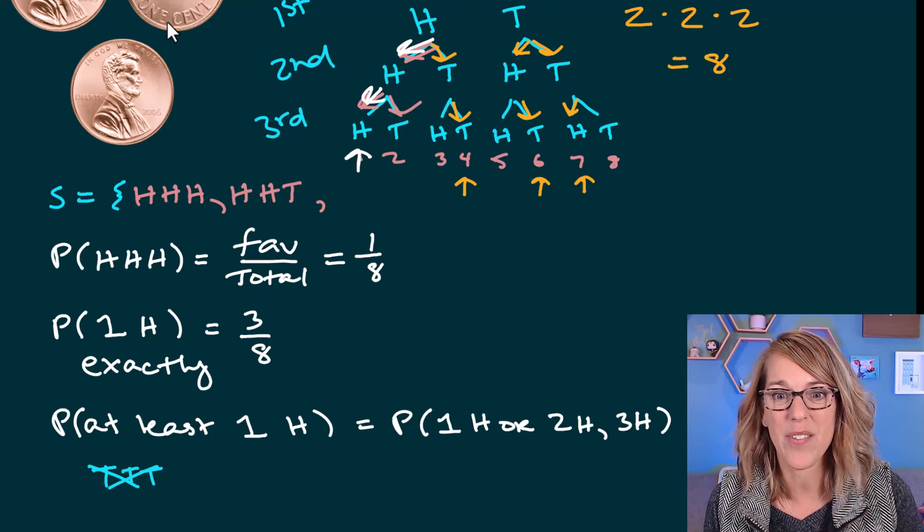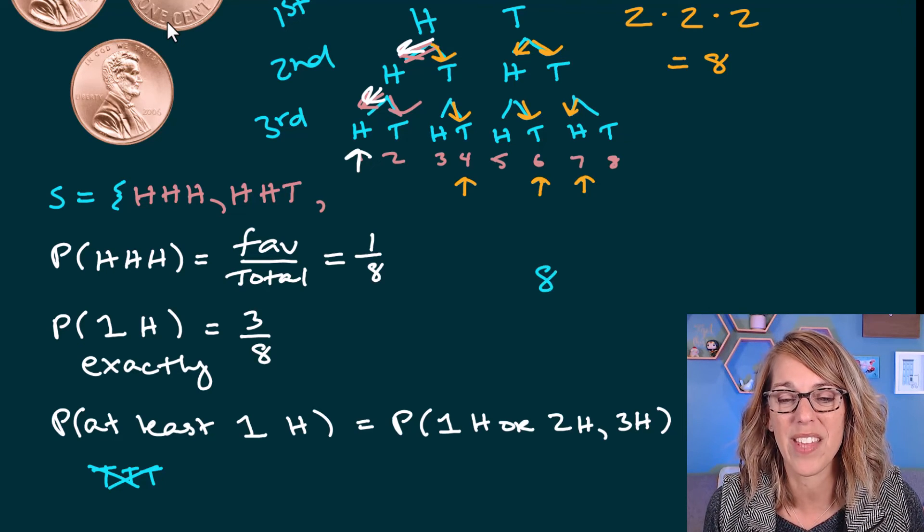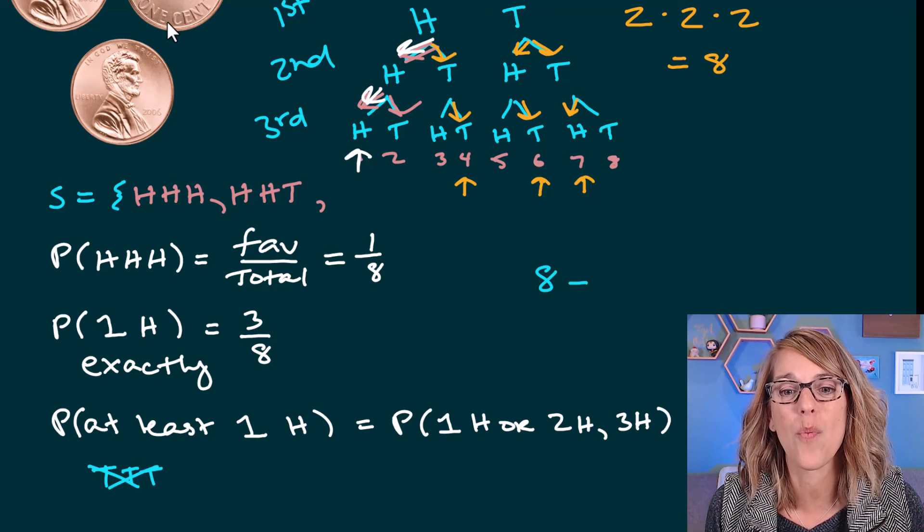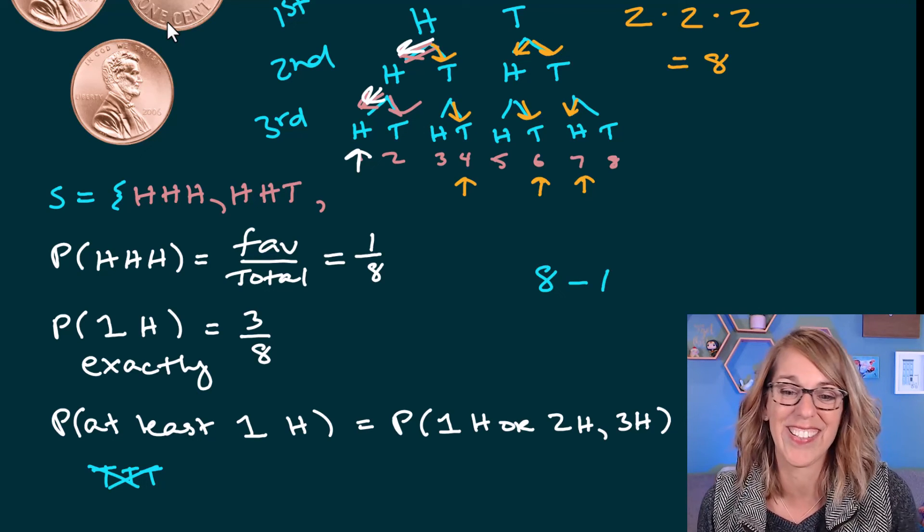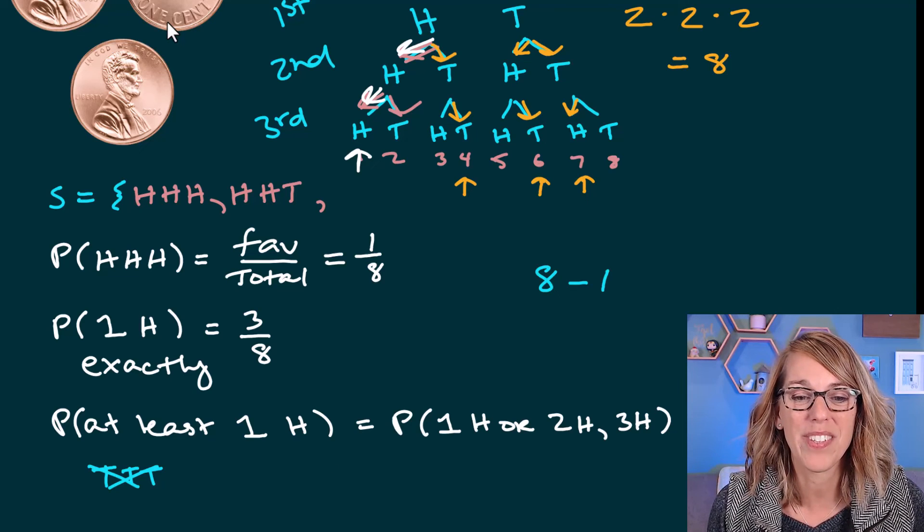So I'm going to take all of those outcomes. There are eight of them, and I'm going to subtract that one outcome I don't want, which is tails, tails, and tails.